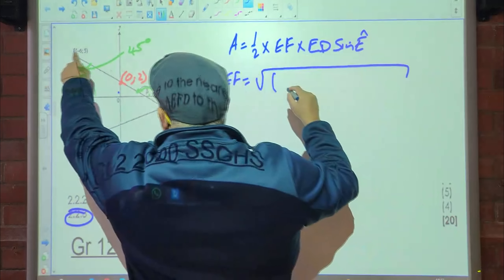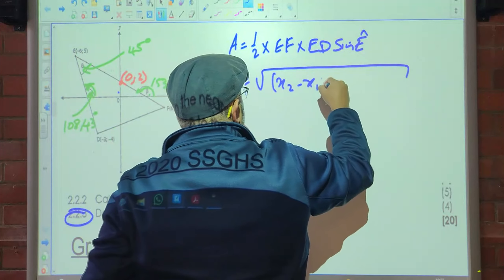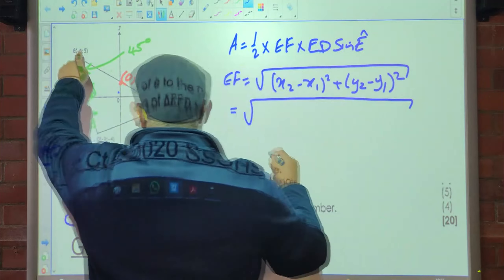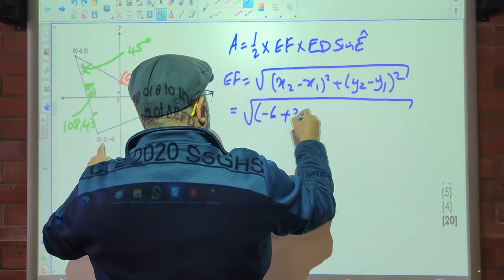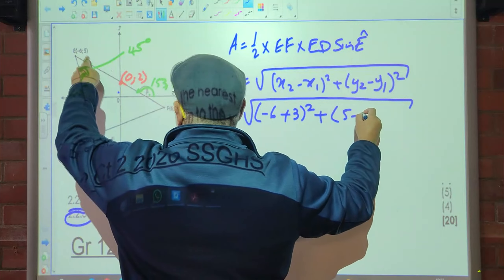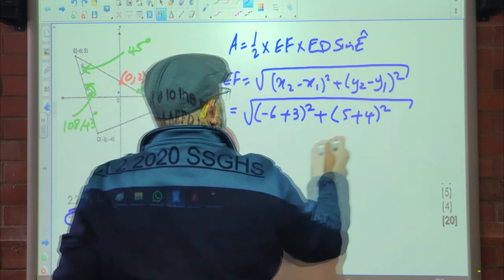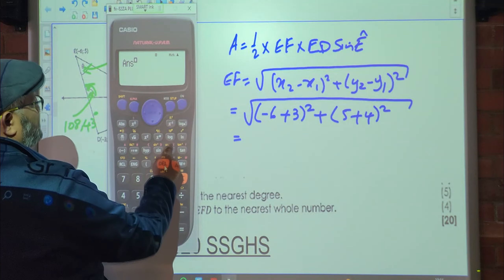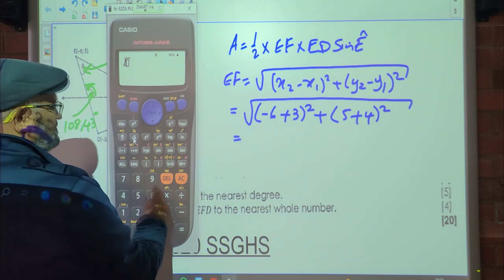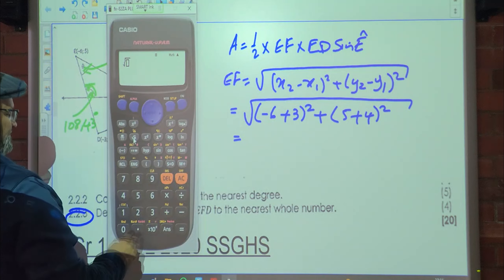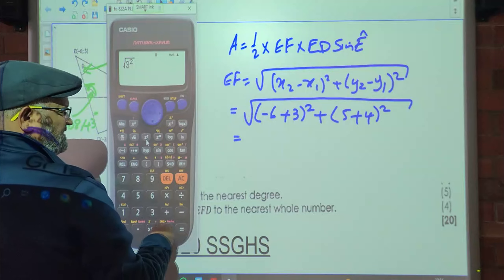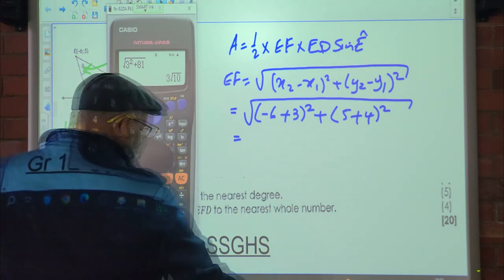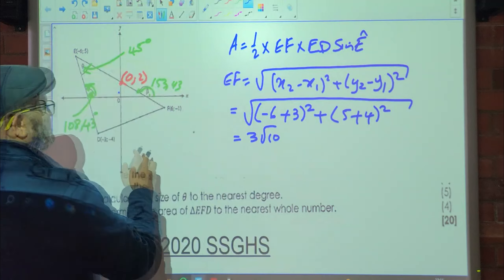For EF: √((−6−6)² + (5−(−1))²) = √(144 + 36) = √180 = 6√5. For ED: √((−6−(−3))² + (5−(−4))²) = √(9 + 81) = √90 = 3√10.